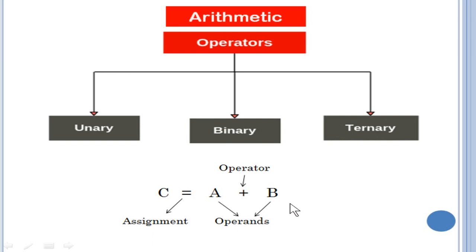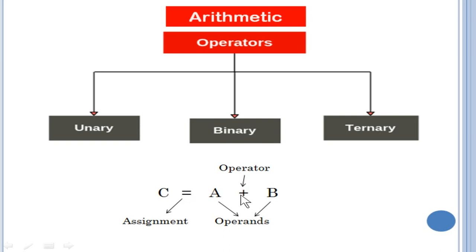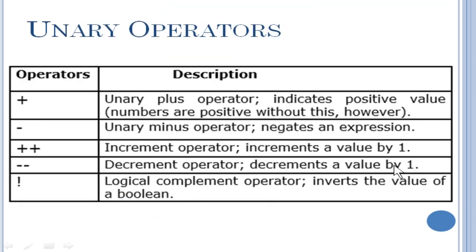You can see what is an operand and an operator with this example: C equal to A plus B. In this case, A and B are the operands, and in between an operator is there — that is the symbol used. You also have an assignment operator which will store the expression result into the variable on the left hand side. Next, we are going to see in detail what unary operators are available.